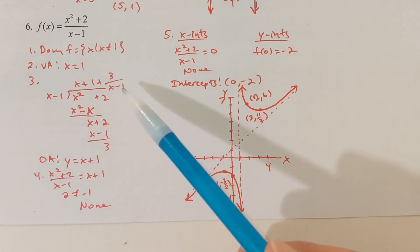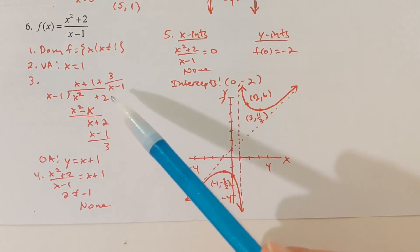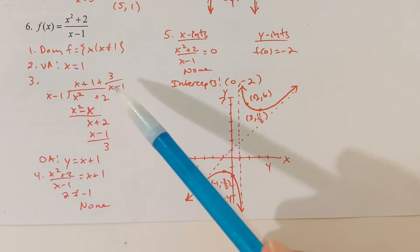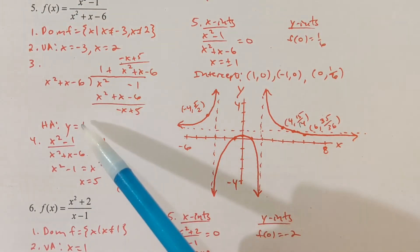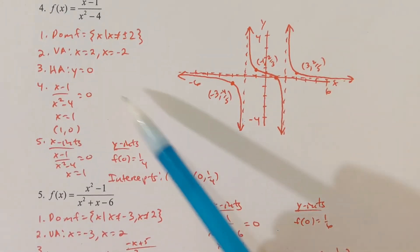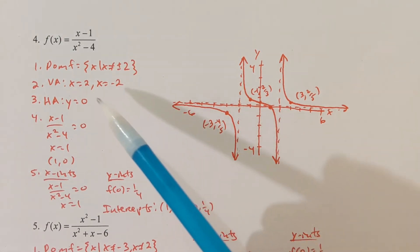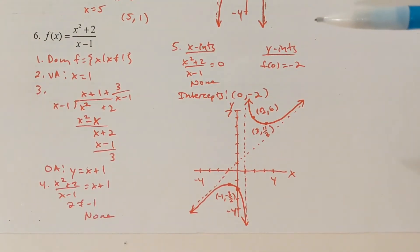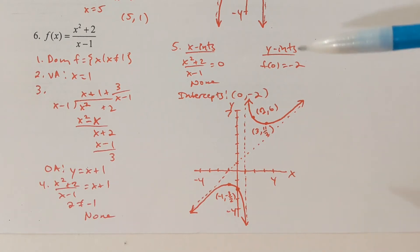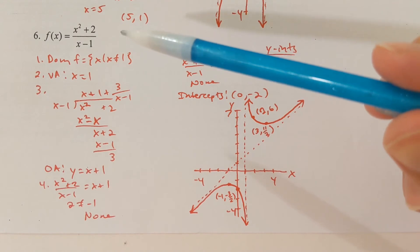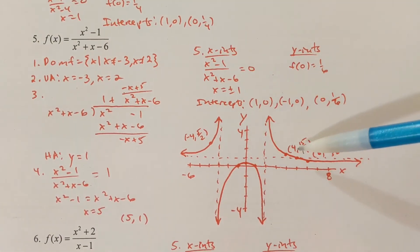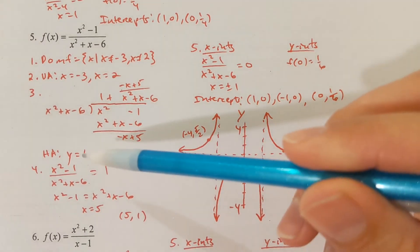In general, when the degree of the numerator is less than or equal to the denominator, y equals 0 is the horizontal asymptote. When the degrees match, you get a horizontal asymptote at y equals some number other than 0 — like y equals 1 in problem 5. When the degree of the top is one more than the degree of the bottom, y equals mx plus b is the oblique asymptote equation.